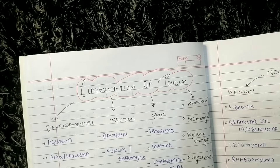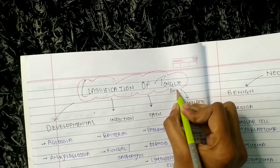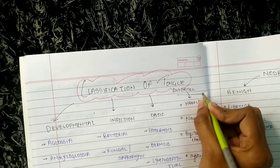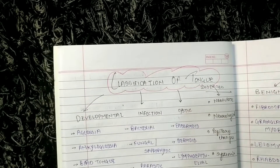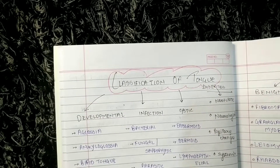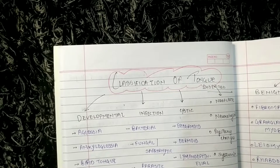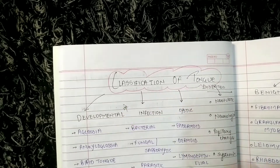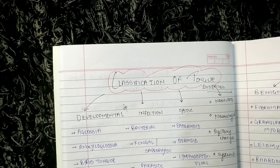Before going towards the diseases, we should know the classification of tongue diseases. You should know the classification because in your university exams they may ask you the classification of tongue. If they ask developmental classification, you write only the developmental part, but in final year you have to write the whole classification.